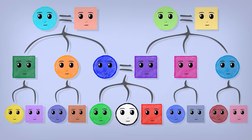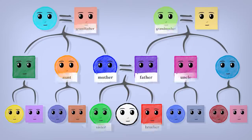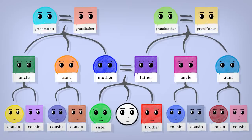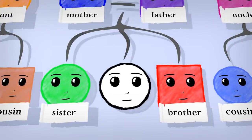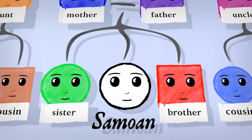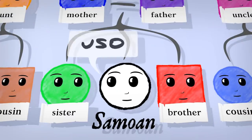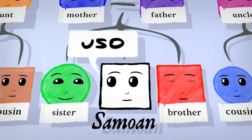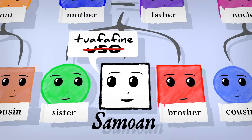Translating your family tree into another language should be simple, right? Just pick a family member and look up the kinship term. So in Samoa, your sister is your Uso — unless you are her brother, in which case she's your Tuafafine.